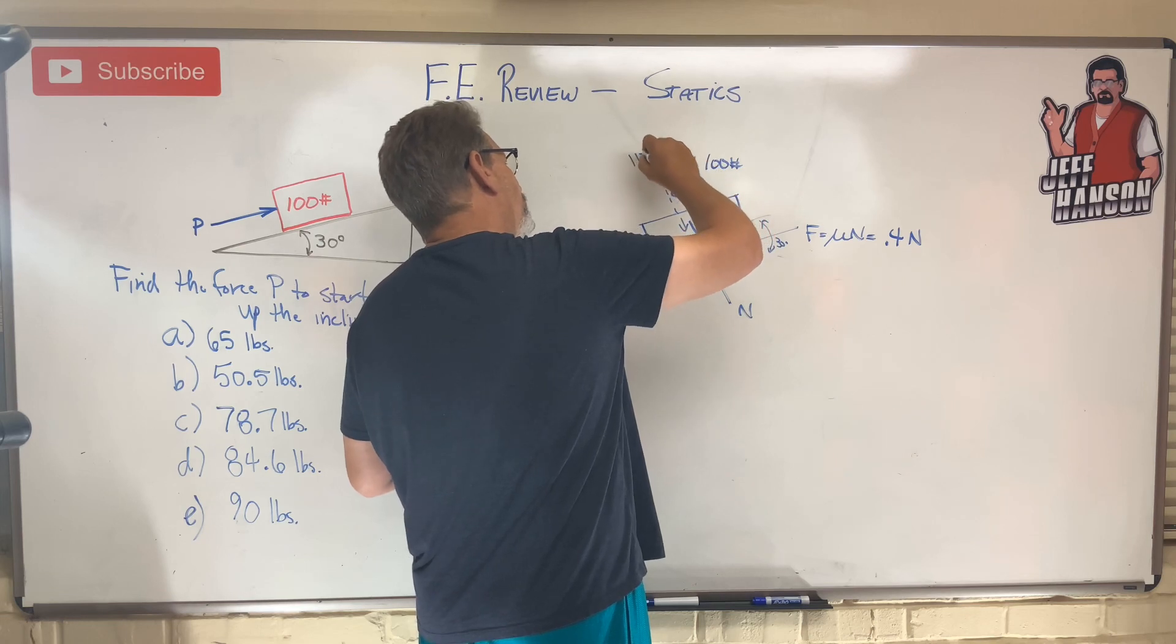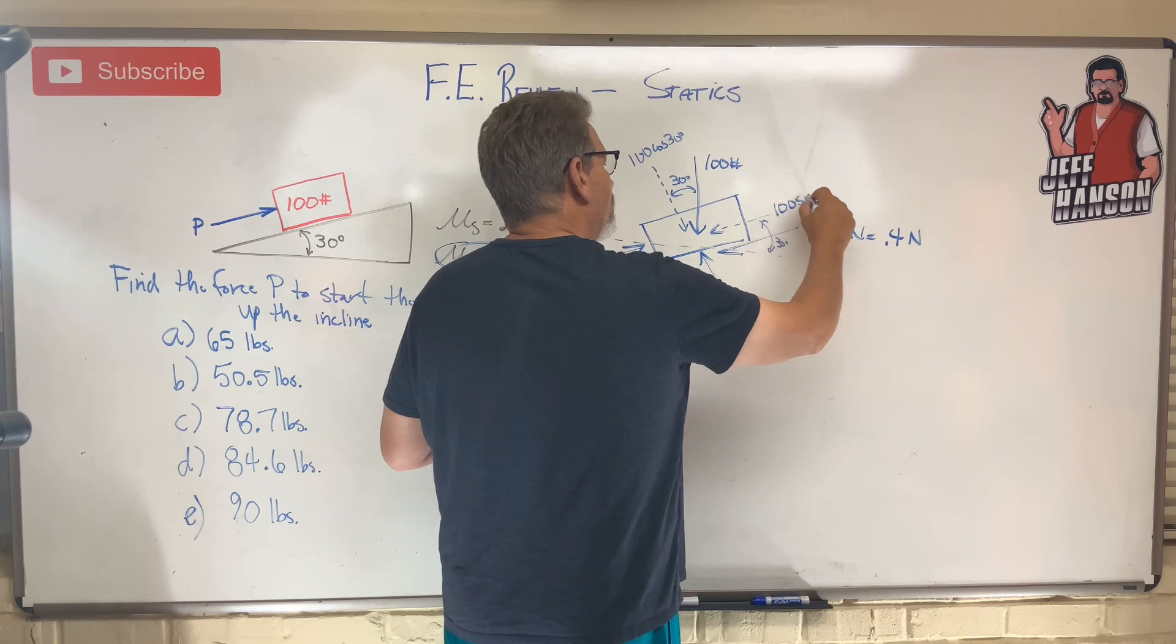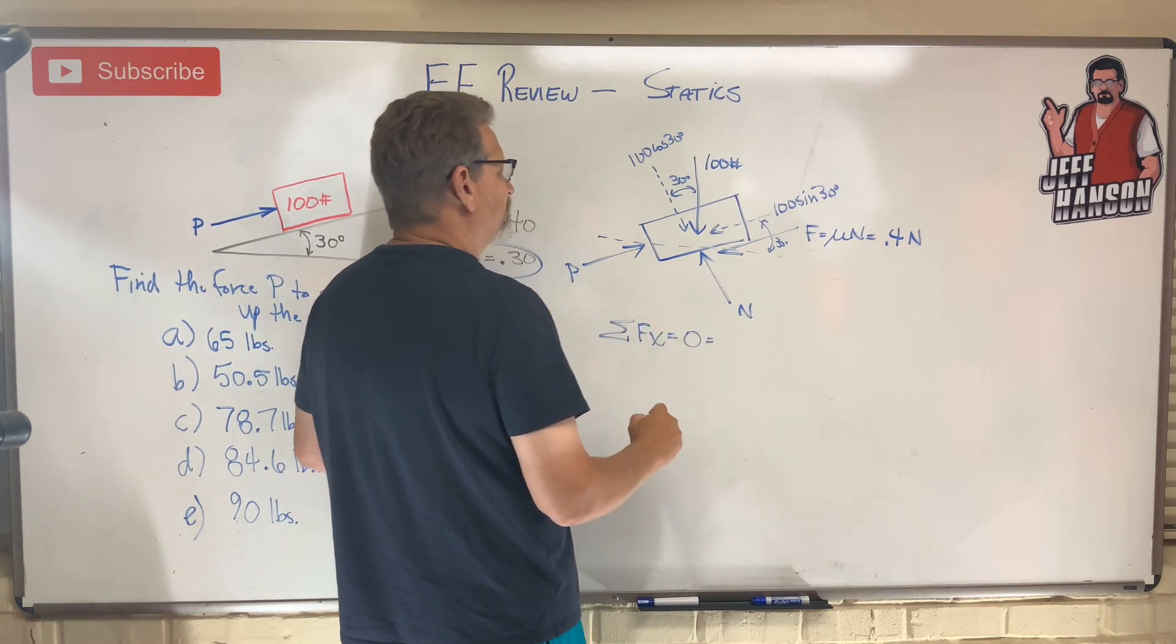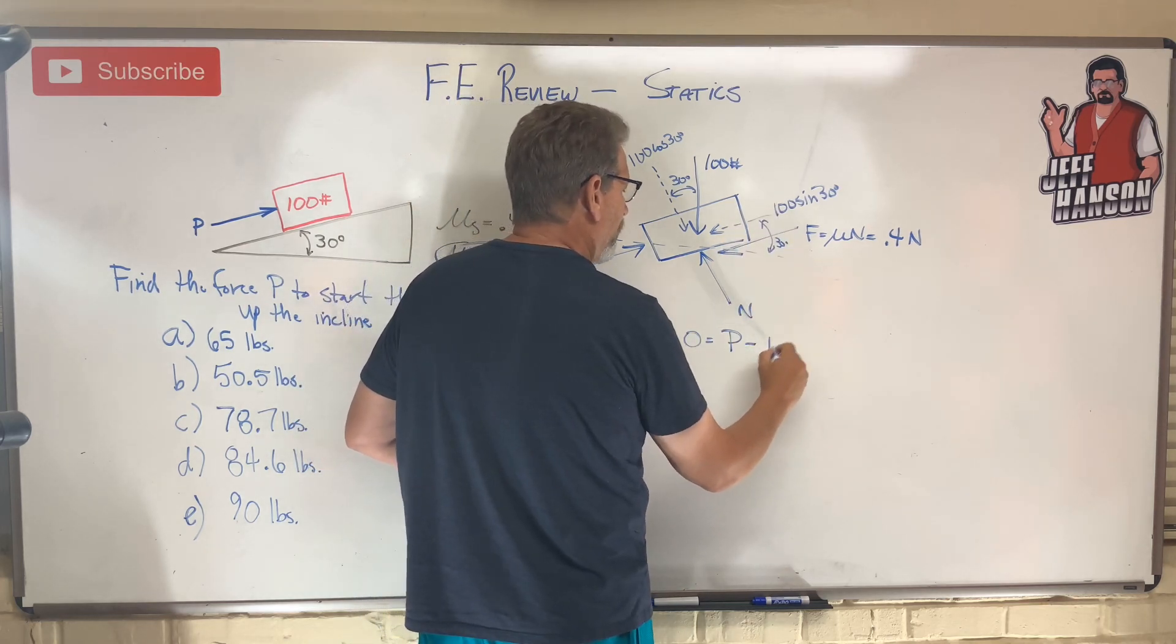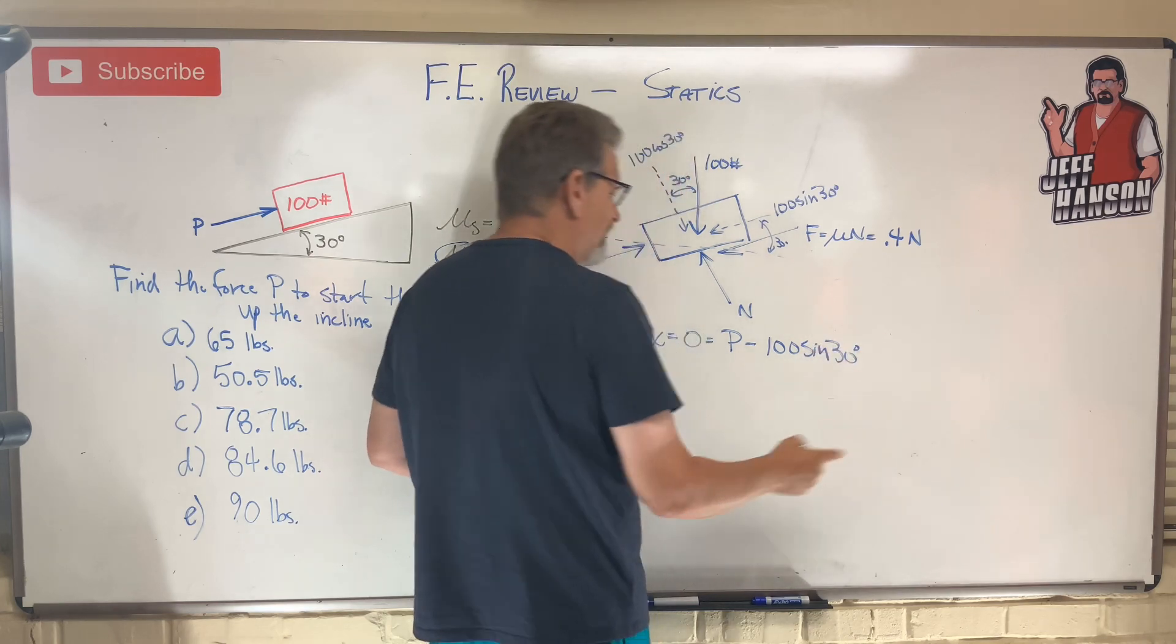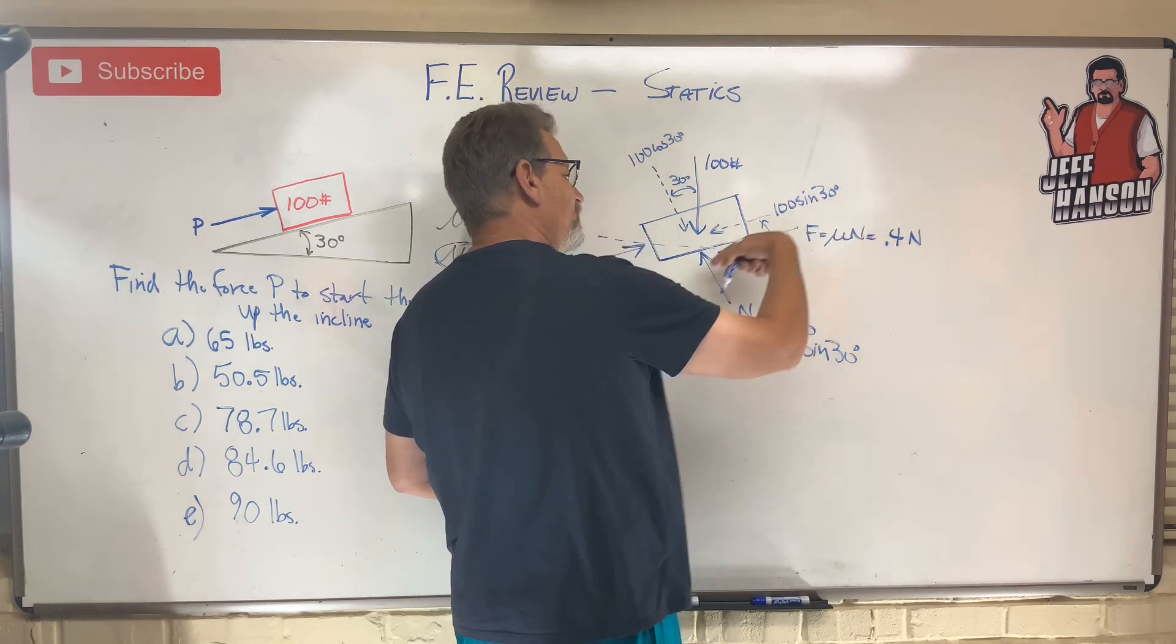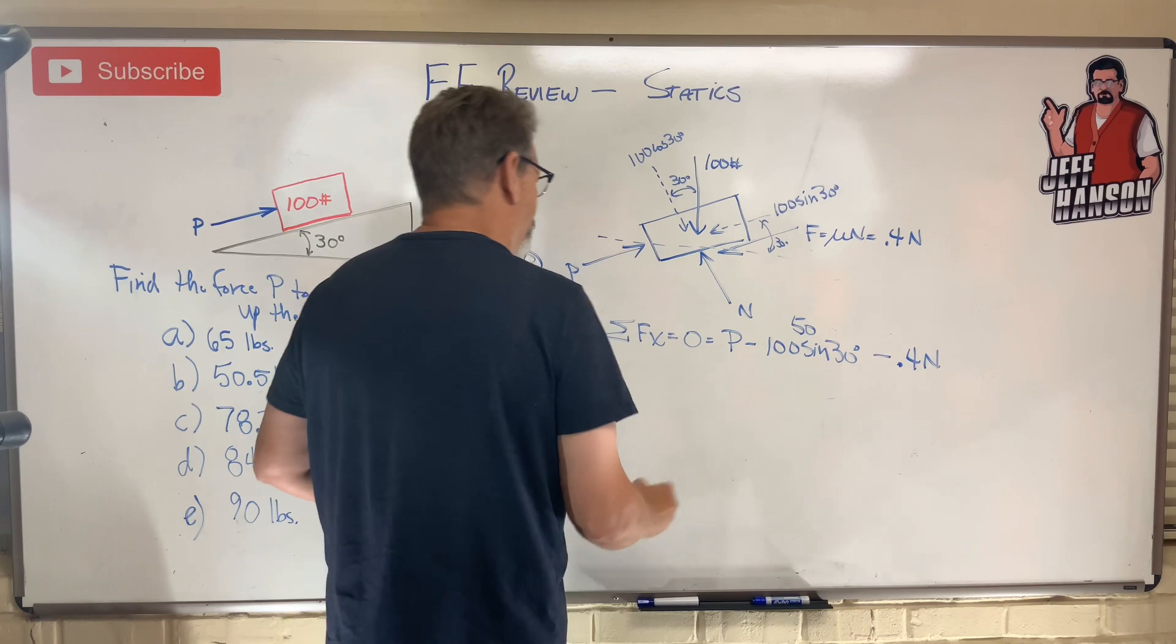So this must be 100 cos 30 and this must be 100 sine 30. Here we go: sum the force in the x direction. I've got P minus 100 sine of 30. You should know sine of 30 is a half times that, that's 50. And then the friction going in this direction, minus 0.4 times N. No help there.